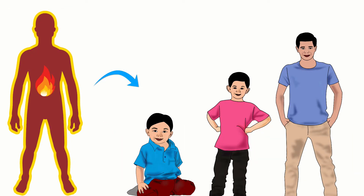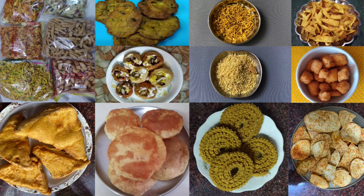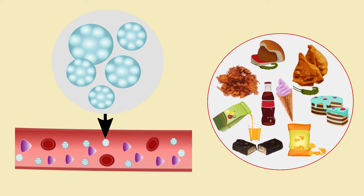Our body needs energy for survival and growth. Glucose is a very convenient source of energy for humans. Multiple molecules of glucose form starch. Starch is a type of carbohydrate found in our food. Carbohydrate-rich foods are abundantly available and are cheap, so we consume a lot of glucose, which is a type of sugar, through such foods.